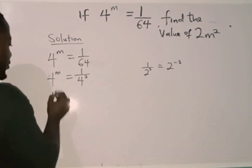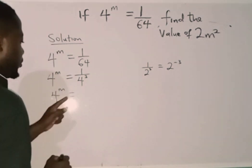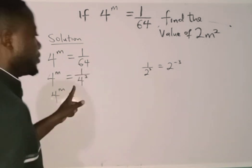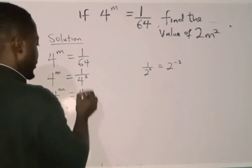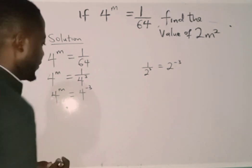So I'm having 4 raised to power m equals to 1 over 4 raised to power 3. We now change to 4 raised to power minus 3.